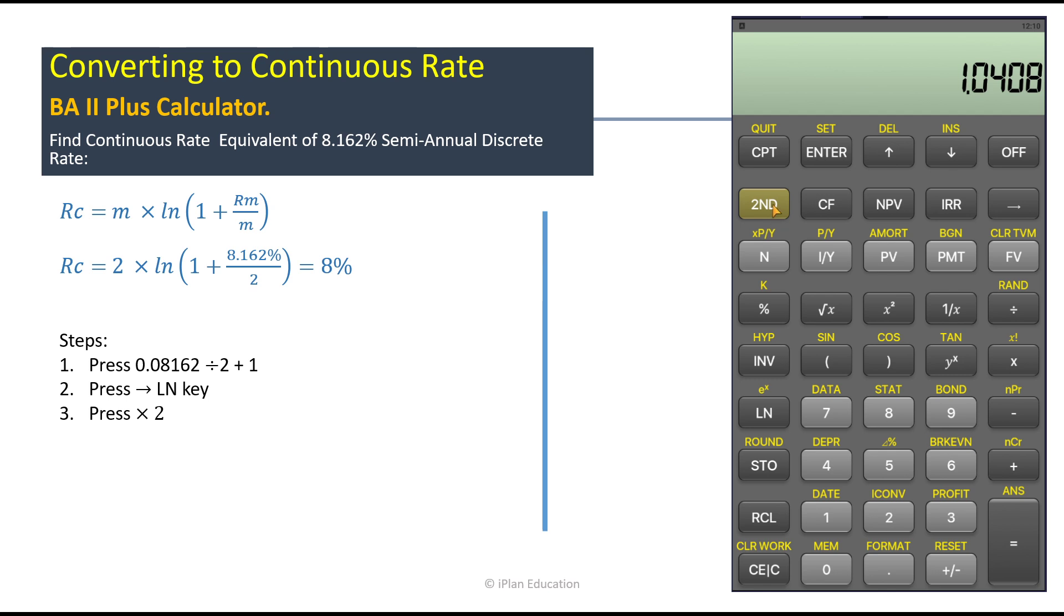So we have the ln key. So press the ln key here and now you multiply it with 2. You get the value that is 8% continuous rate of compounding.